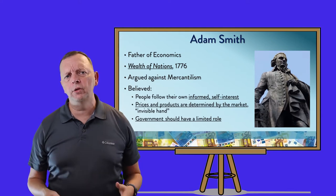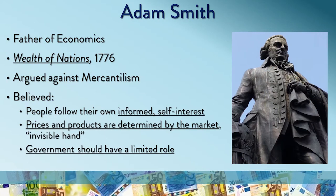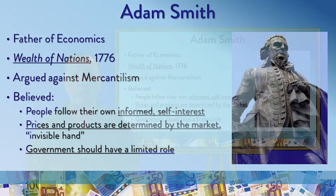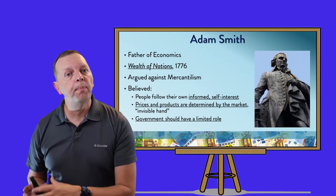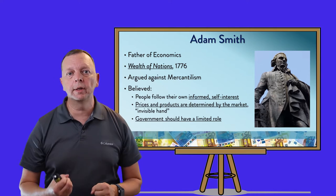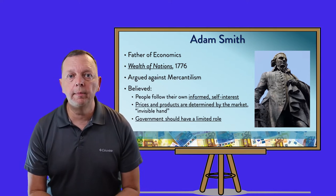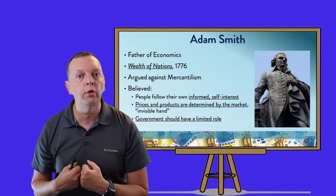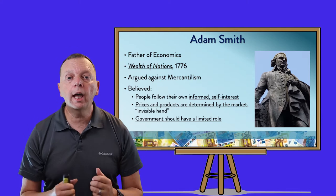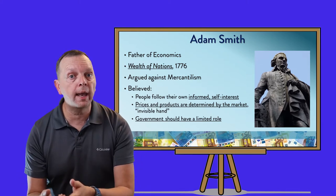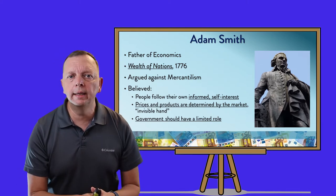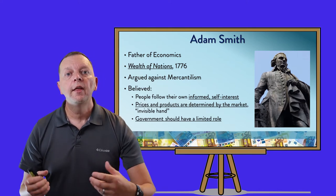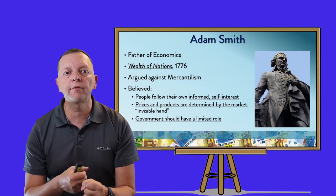Now, Adam Smith had three major things he looked at. First of all, he said that people follow their own informed self-interest. He tells the story of a butcher and a person buying meat. The butcher has a self-interest to make a profit. However, the person buying the meat has a self-interest of being able to get the meat. If the butcher has prices too high, he's not going to buy the meat, and therefore the butcher will not have his own self-interest recognized. Likewise, if the butcher sells the man bad meat, the customer is not going to come back.